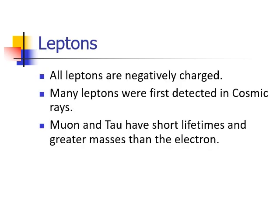All leptons, like the electron that we've heard of, are negatively charged and most of them were discovered in cosmic rays. The muon and the tau have shorter lifetimes and much greater masses than the electron.